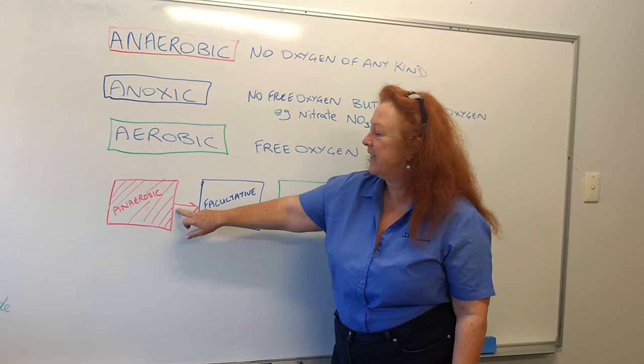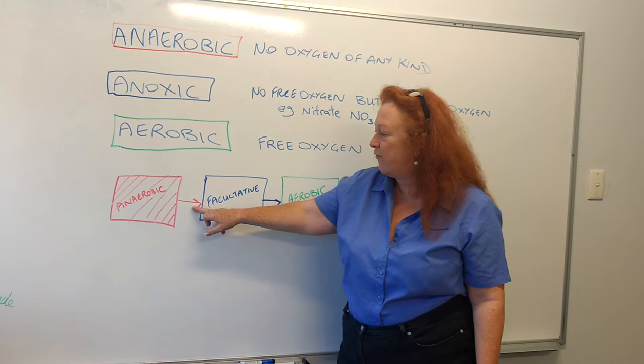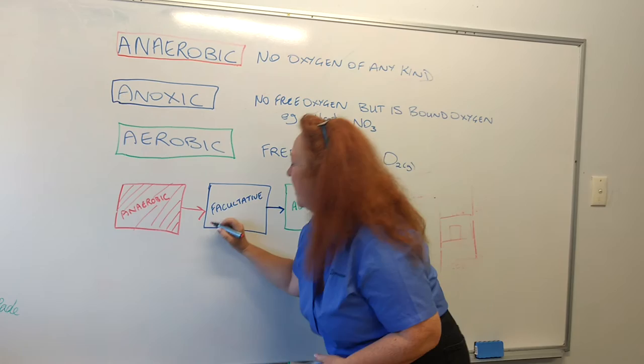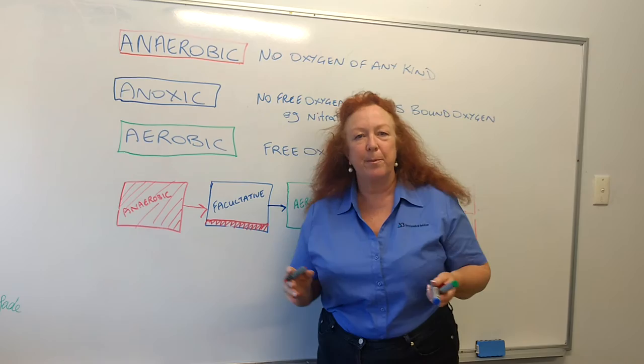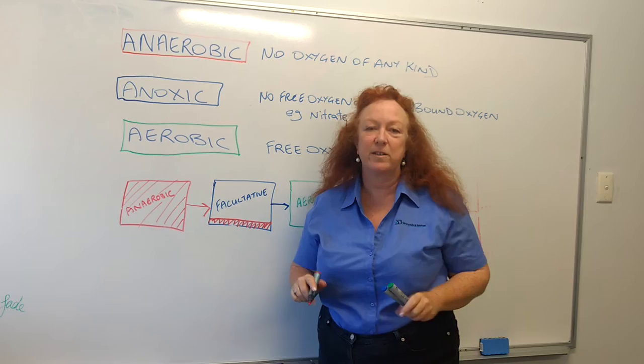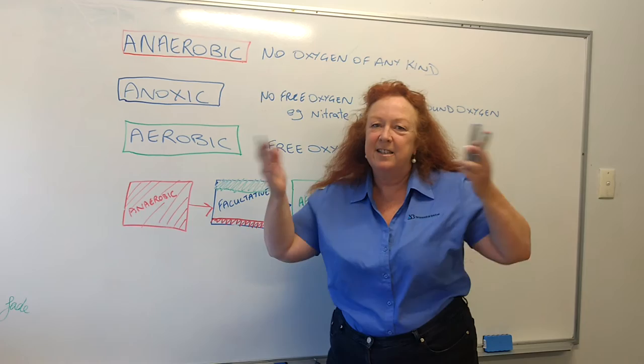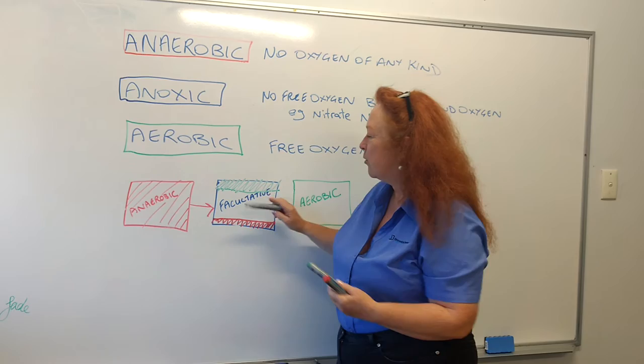The anaerobically treated effluent will then flow into a second lagoon, which we usually describe as facultative. We typically have a layer which is anaerobic on the bottom of the pond, where all the heavy solids settle out and break down without any oxygen. We have an aerobic layer on the top, where algae are living and growing and producing lots of oxygen, and the wind is mixing the water and adding oxygen too.